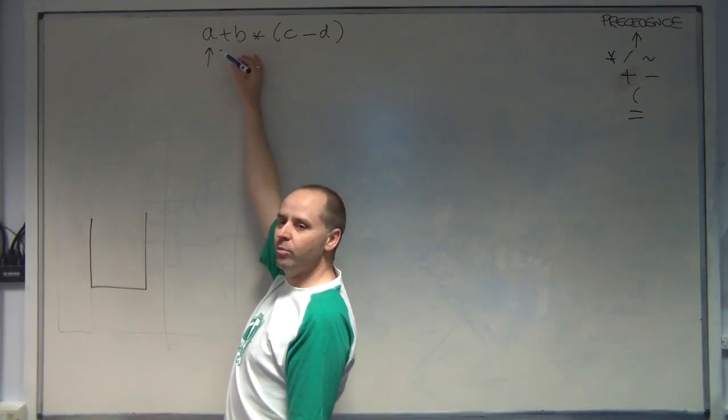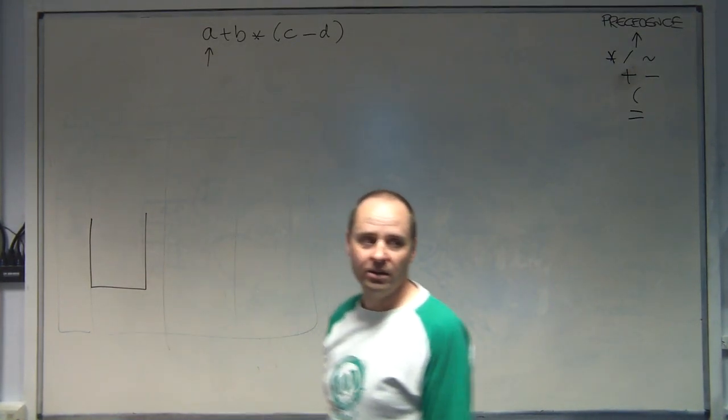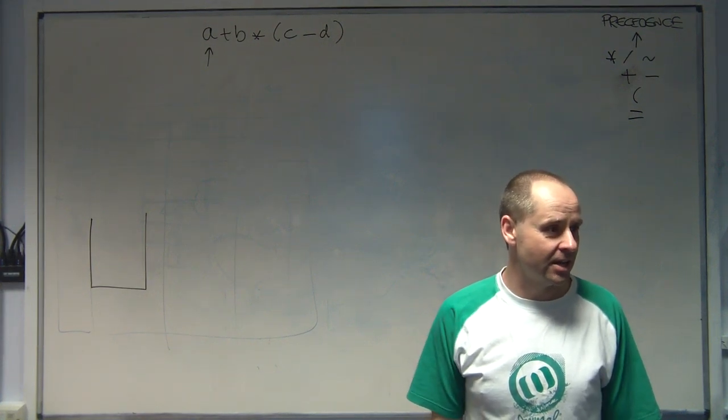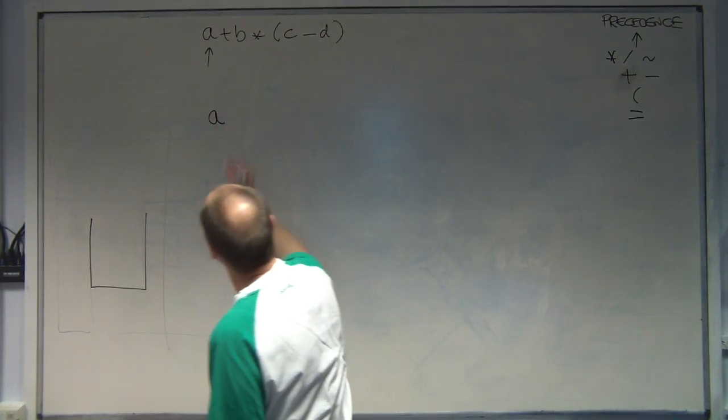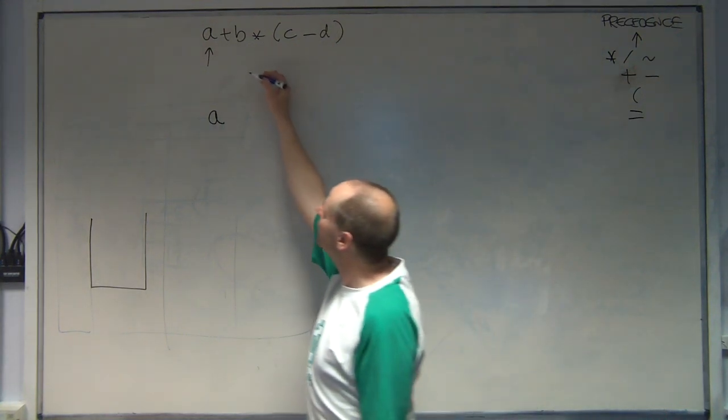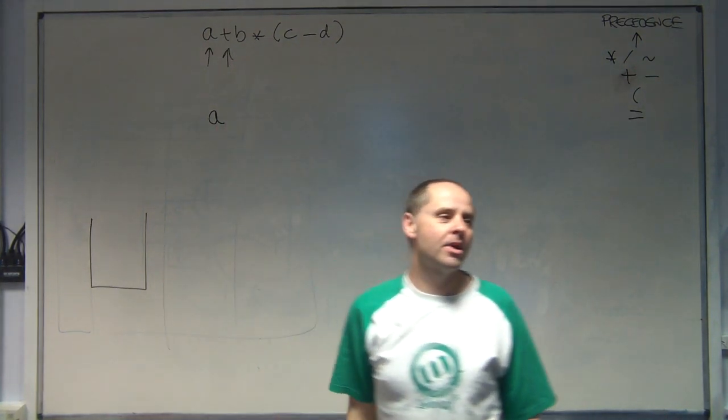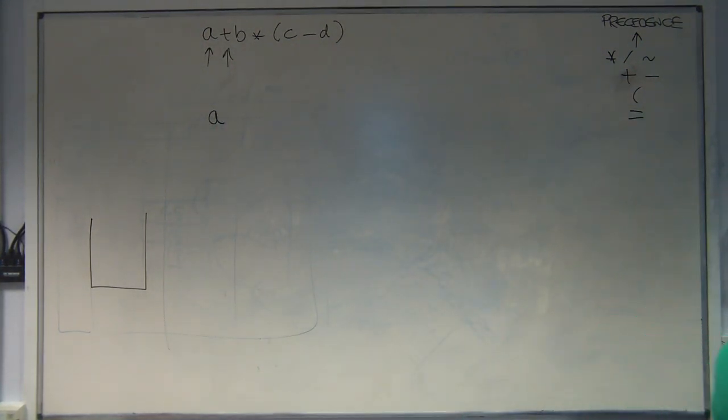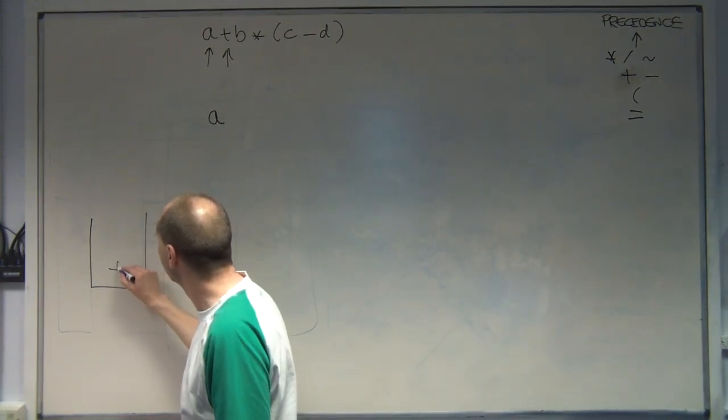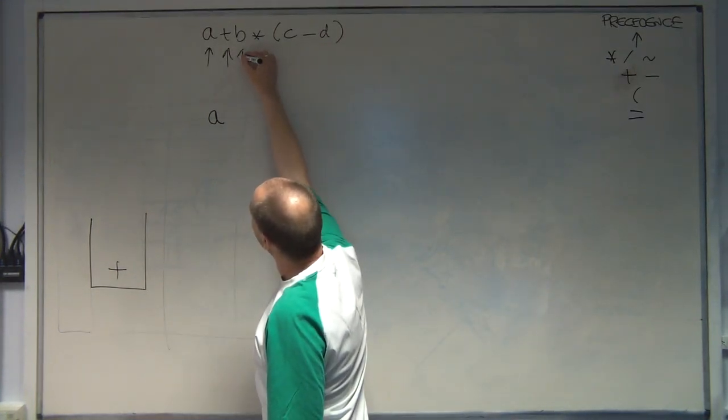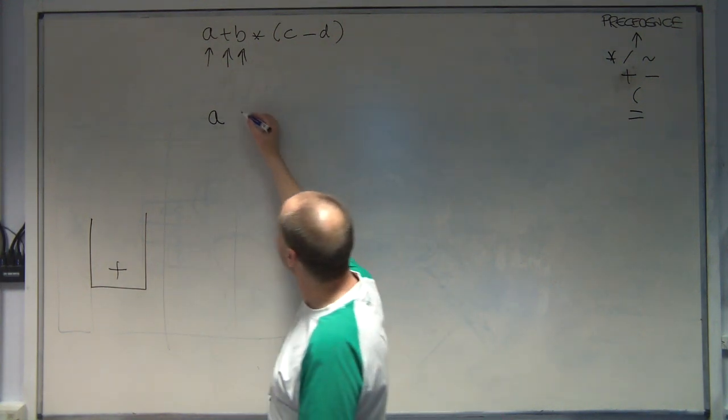Right, so if we get an operand, we just write it down. Here's a reverse polish, write it down. Move on to the next thing. It's an operator. If the stack is empty, you can write the operator down. Now you don't have to think about it. Move along. Another operand, write it down.